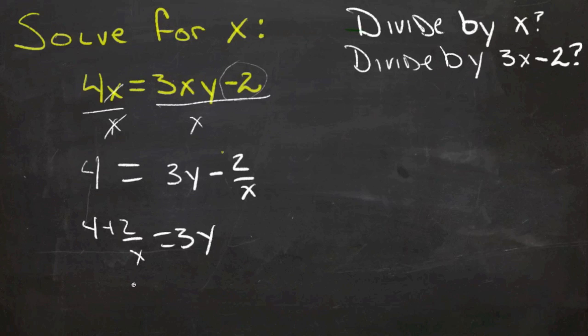To get x out of the denominator, we're going to have to multiply by x again, and that's going to take us right back where we started. So I'm thinking that's pretty much a dead end as far as getting x by itself.